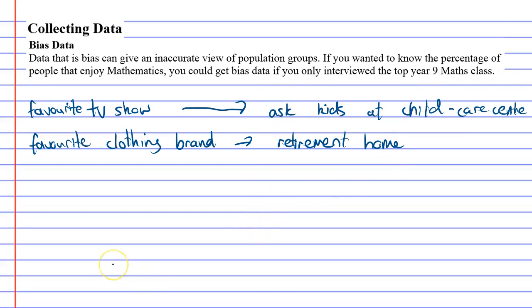Now it's important - what you need to understand is we can't always do a census. We can't always interview everyone, and so whenever you do a sample you can get biased data and you've got to really make an effort to make sure that this doesn't happen.